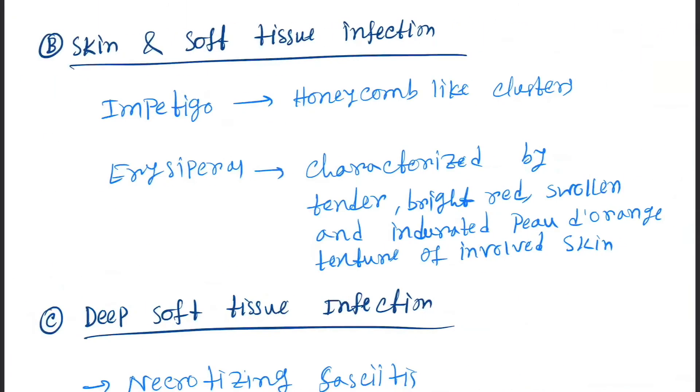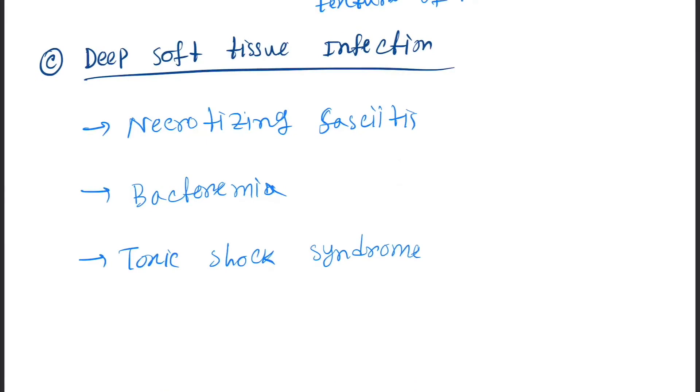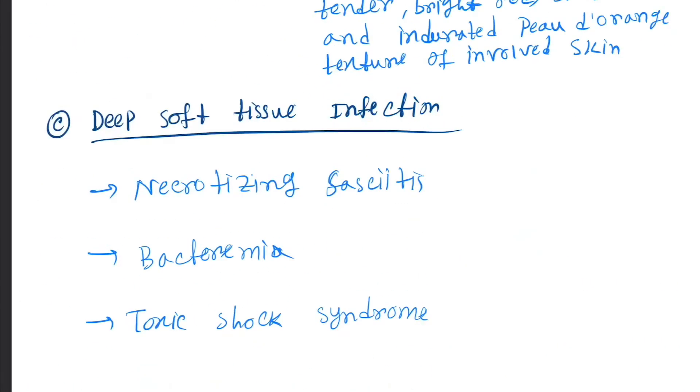Next clinical manifestation is skin and soft tissue infection: impetigo and erysipelas. Next is deep soft tissue infection: necrotizing fasciitis, bacteremia, and toxic shock syndrome. Toxic shock syndrome previously discussed, it is also produced by Staphylococcus which is the main organism.